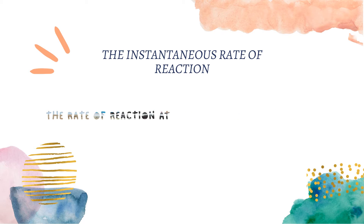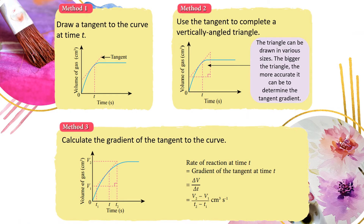The instantaneous rate of reaction is the rate of reaction at a particular point of time. The steps to calculate it are: Step 1 — draw a tangent to the curve. Step 2 — draw a triangle using the tangent. Step 3 — calculate the gradient of the tangent using the formula (V2 minus V1) over (T2 minus T1).